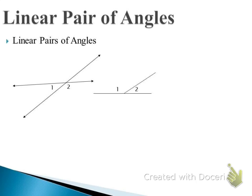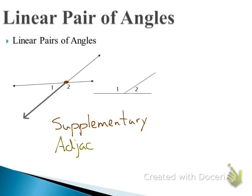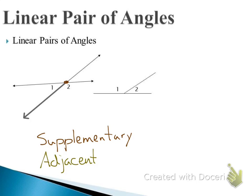So why do we need the concept of adjacent? A linear pair of angles is an important one. A linear pair forms a straight line, so the angles are supplementary. They are also adjacent — they share a side and share a vertex. So a linear pair is a pair of angles that are both supplementary and adjacent. It's not either/or — it has to be both, or it's not a linear pair.